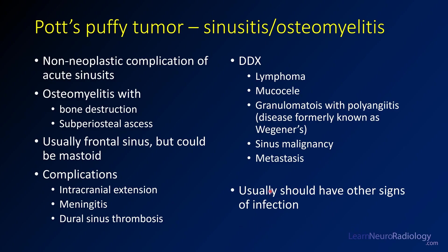The differential includes lymphoma, mucocele — though a mucocele will show much smoother remodeling of bone without that kind of destruction — granulomatous disease with polyangiitis (formerly Wegener's disease), particularly involving the nasal cavity and maxillary sinuses, sinus malignancy, and metastasis. Typically, these patients are going to have other signs of infection: redness, fever, and pain.